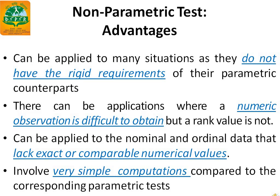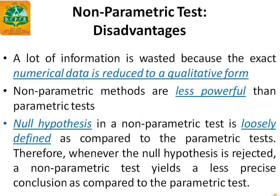Another advantage is that non-parametric tests can often be applied to nominal and ordinal data that lack exact or comparable numerical values. For example, respondents may be asked a question on their religion — Hindu, Sikh, Christian, or Muslim. This is nominal scale data and can only be analyzed by non-parametric methods. Additionally, non-parametric tests involve very simple computations compared to the corresponding parametric tests.